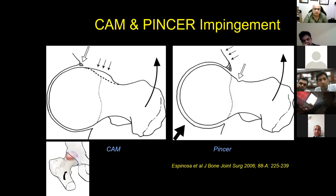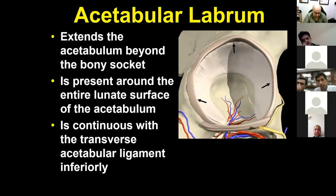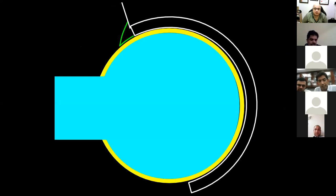This concept, if untreated, leads to osteoarthritis. Regarding cam and pincer lesions: the cam lesion is an overgrowth seen on the anterosuperior part of the femoral head. The pincer lesion is an overgrowth of the acetabulum. The acetabular labrum surrounds the joint — very different from the shoulder — with a deep groove, labrum all around, and the transverse ligament on the inferior side, with vessels entering from below.